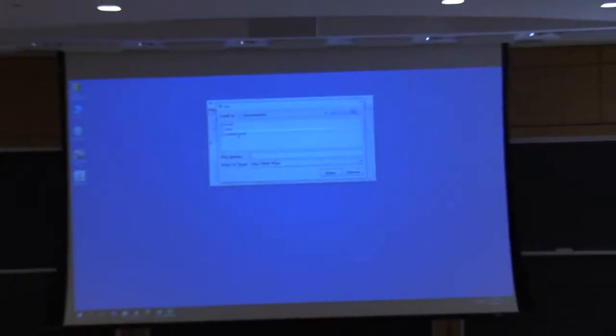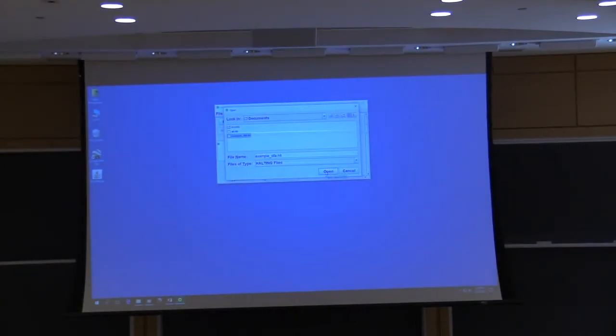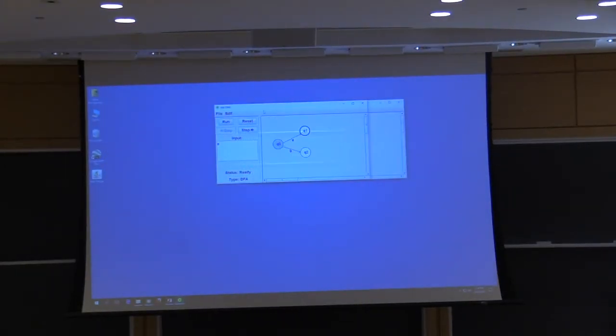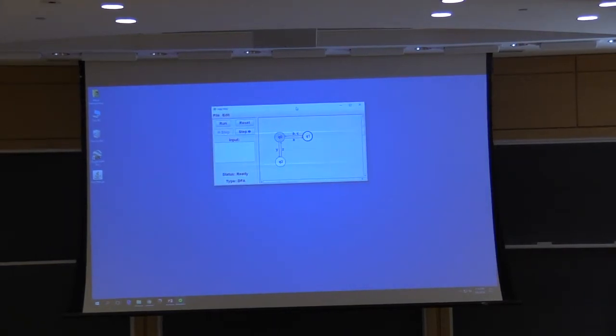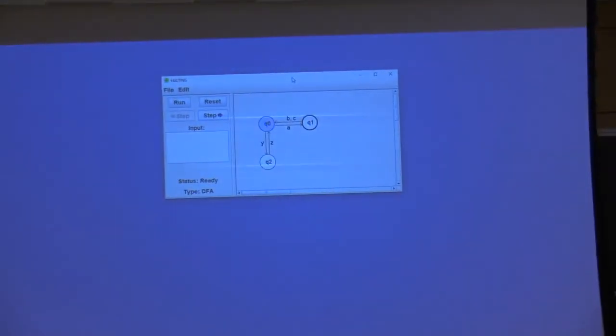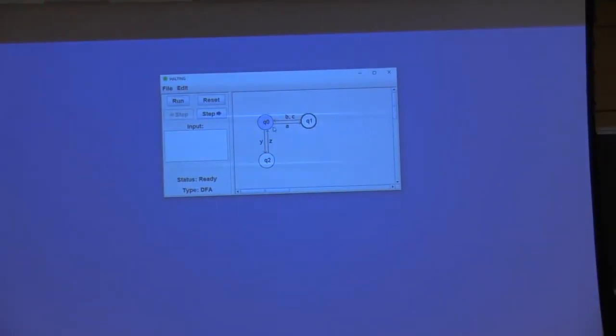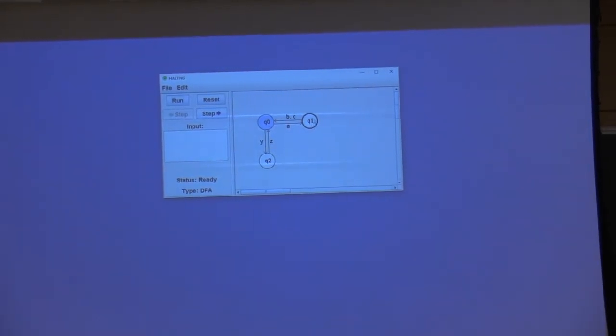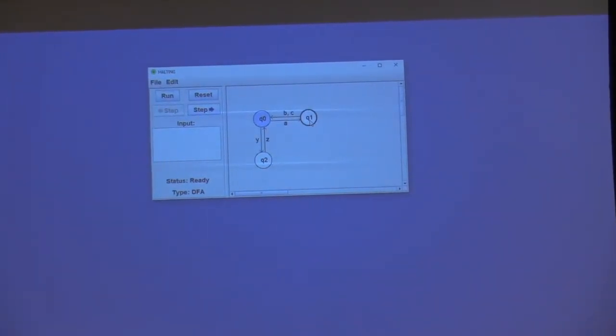So now I'm going to open up a slightly more complicated machine that I built earlier. See that this one also has three states but it's got more transitions. So you can do some more things with this one. So q0 still goes to state q1 on A. But q1 transitions back to q0 on either a B or a C, so there's two transitions here. And we've also got q2 with Y and Z.